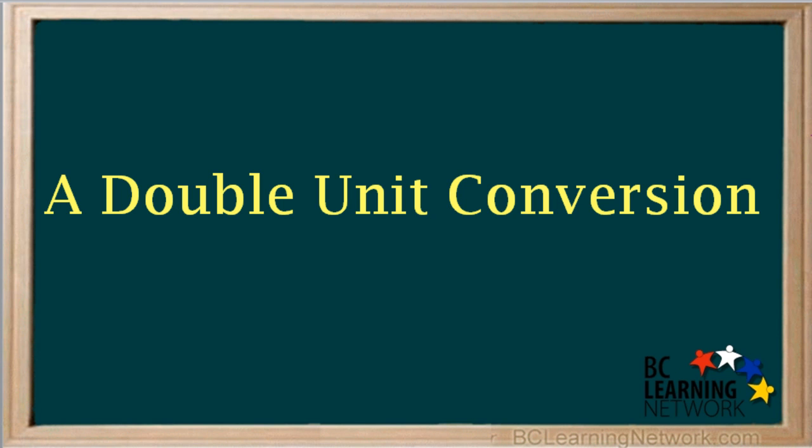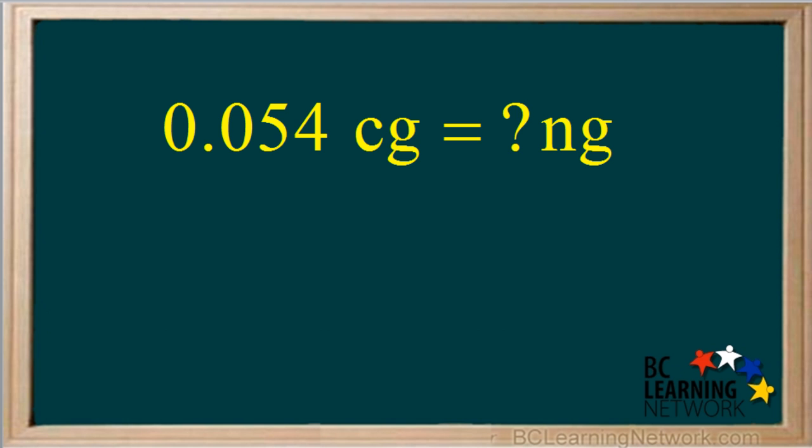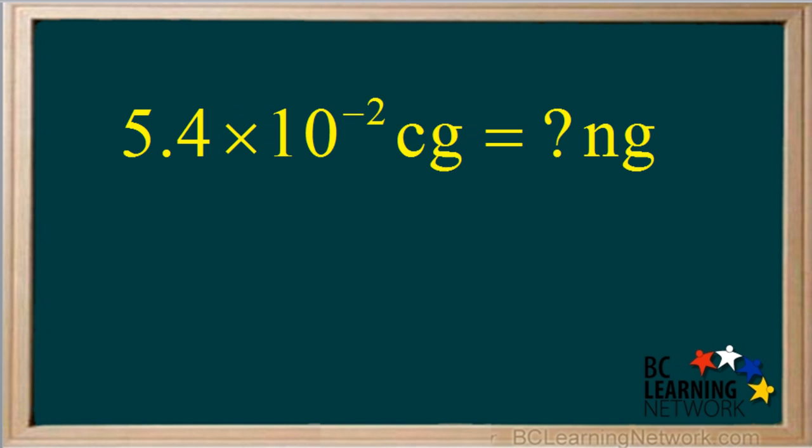Here's an example of a double unit conversion. We are asked to convert 0.054 centigrams into nanograms. We start by expressing the given value in scientific notation. Moving the decimal two places to the right will give us 5.4. So this is 5.4 times 10 to the negative 2 centigrams.